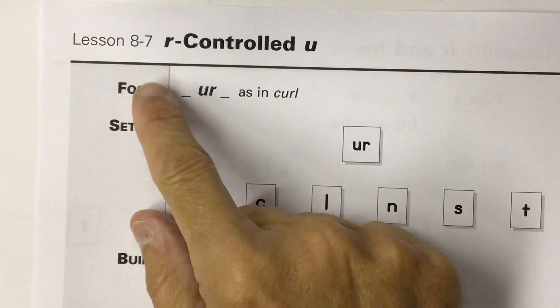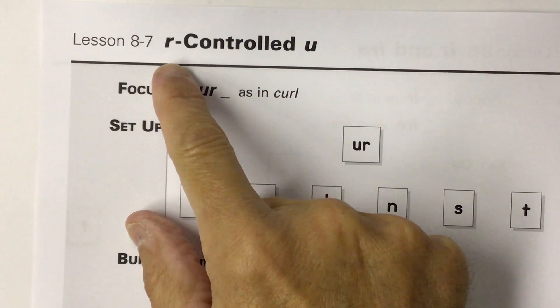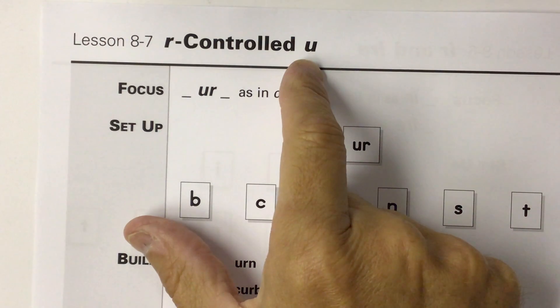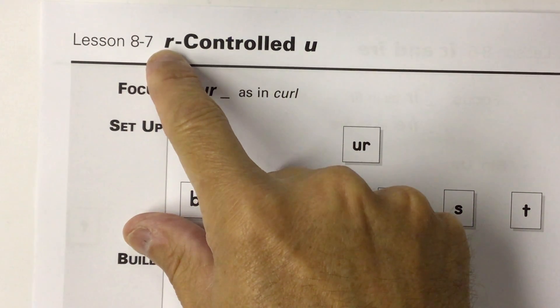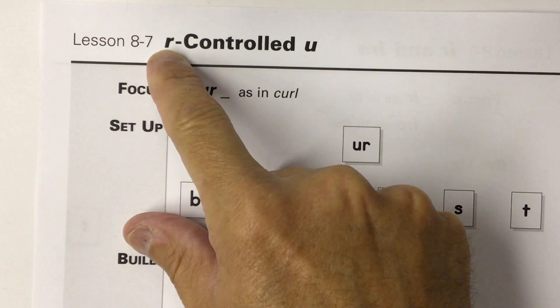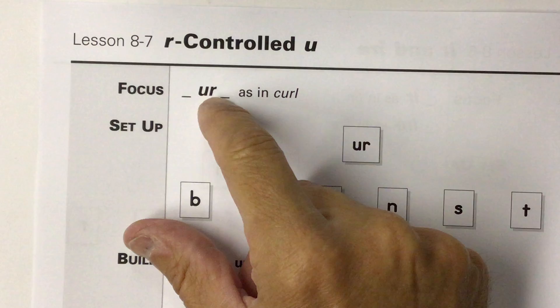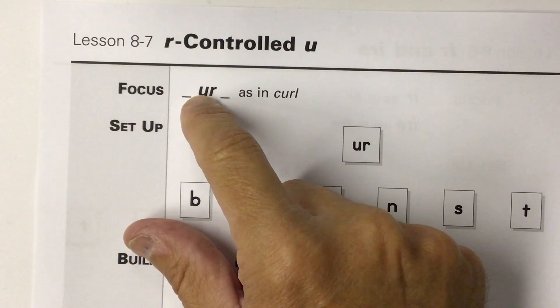This is lesson 8-7, r-controlled u. Another lesson on the bossy R. The R that comes after a vowel and controls the vowel. In this lesson, the R comes after the U.